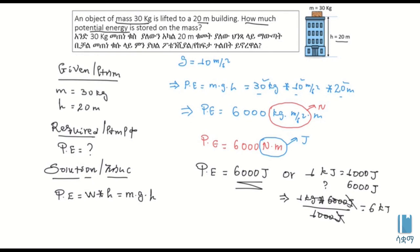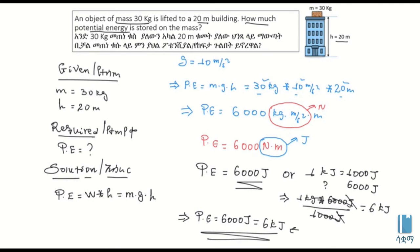The potential energy answer: I will write down 6 kJ — 6,000 joules. So let's see the answer.